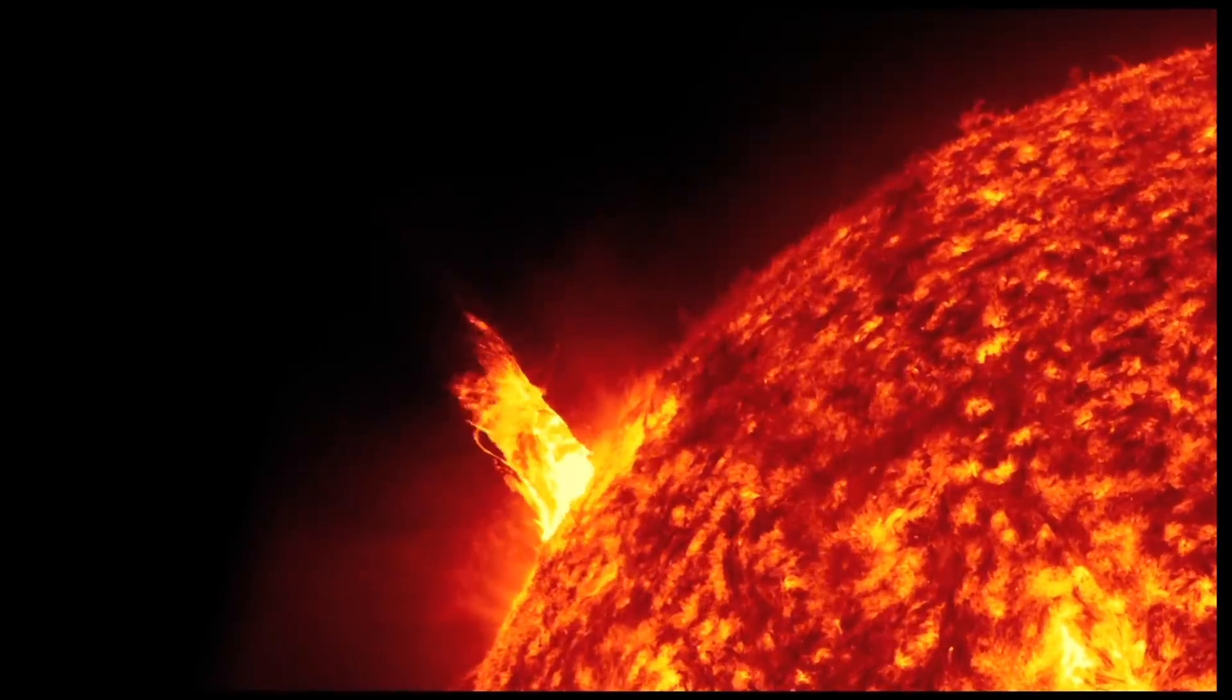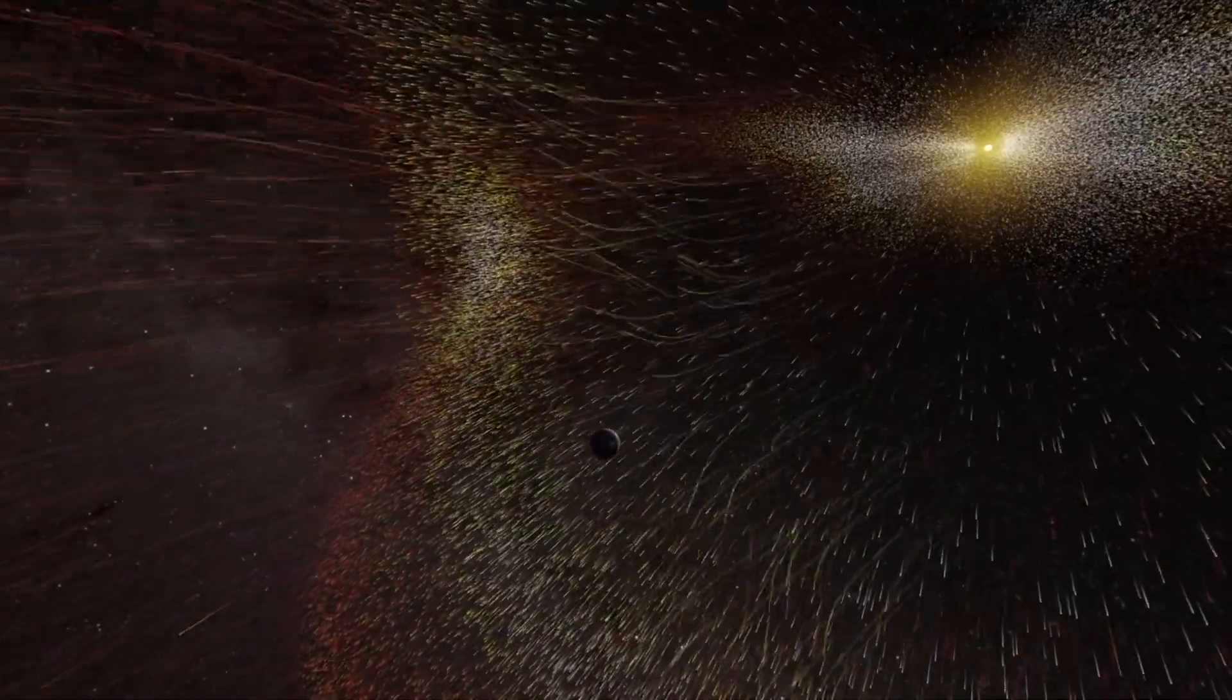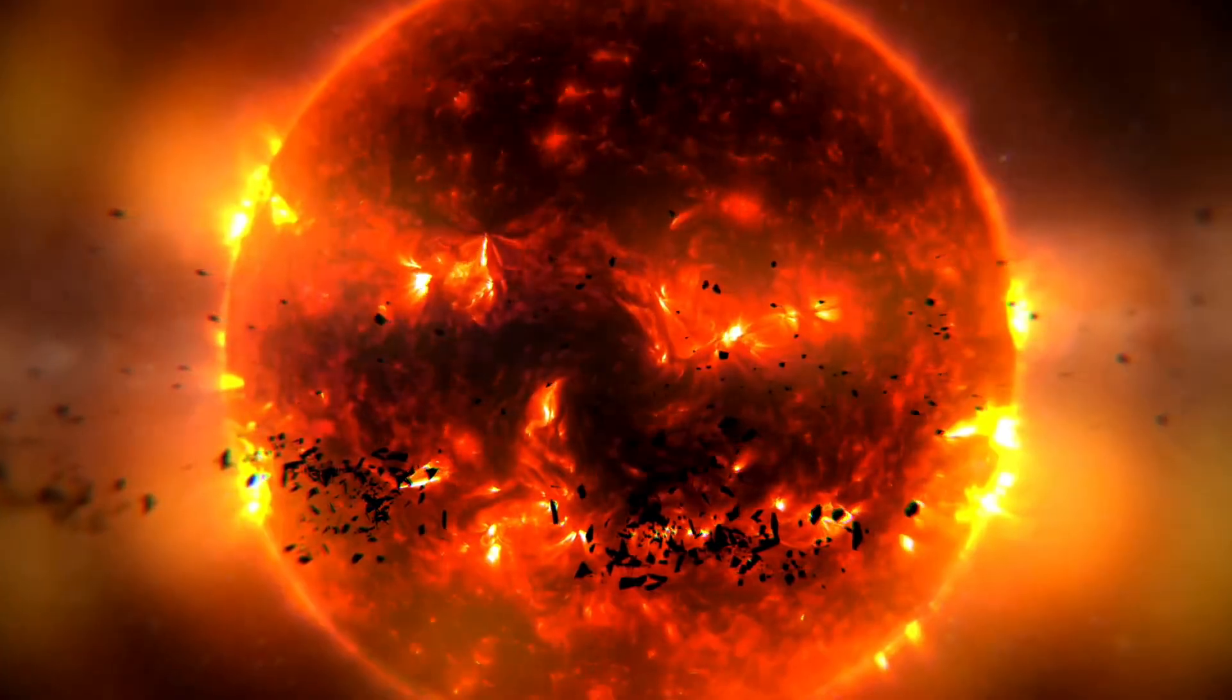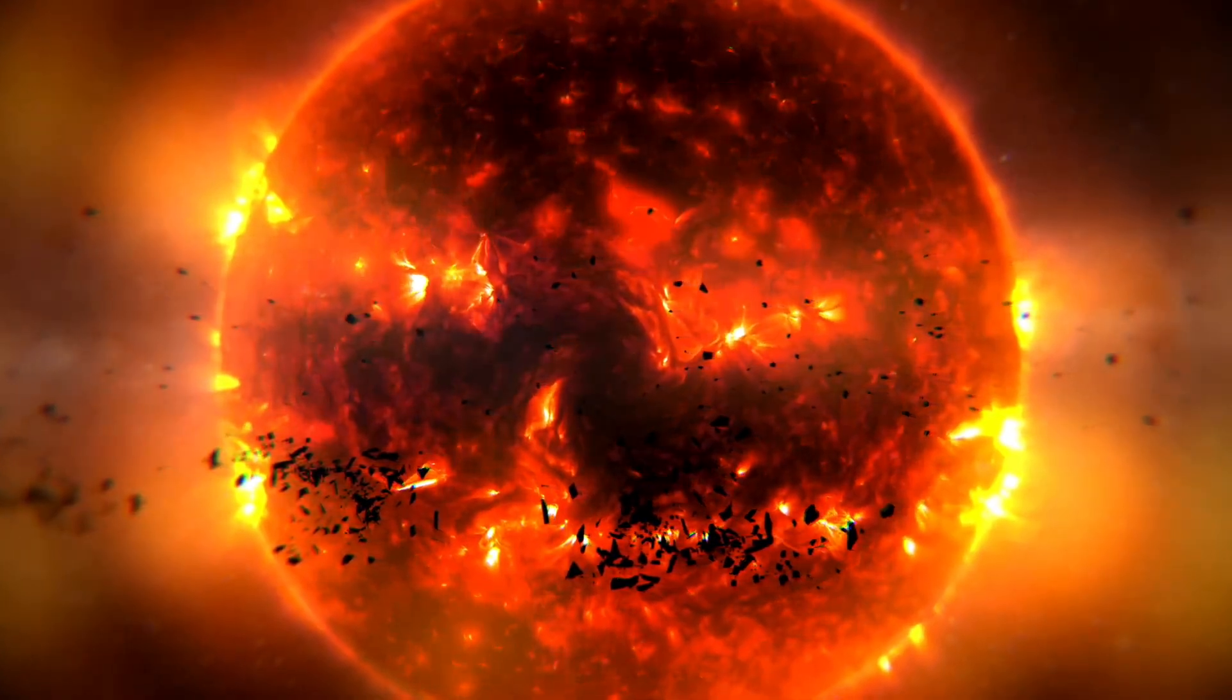A new study is sending a quiet but serious warning. The sun is beginning to wake up from a period of unusual calm. And if scientists are right, we could be heading into decades of heightened and potentially dangerous solar activity. A time when space weather becomes more violent than anyone expected. To understand why that matters, it helps to know how the sun behaves.